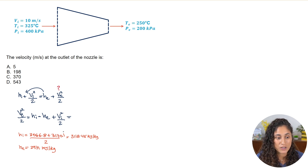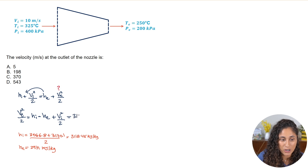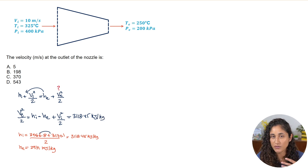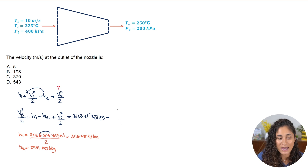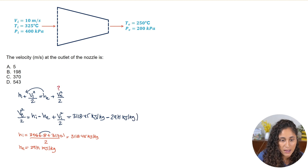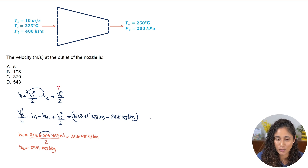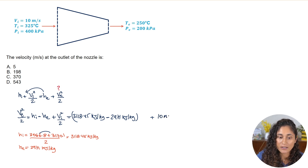Now let's plug in the numbers. The inlet enthalpy is 3118.45 kJ/kg — we took the average since 325°C was between 300°C and 350°C. Minus the exit enthalpy of 2971 kJ/kg. Then we add the inlet velocity: 10 m/s squared, divided by 2. I'll leave space for the unit conversion, which we'll go over next.